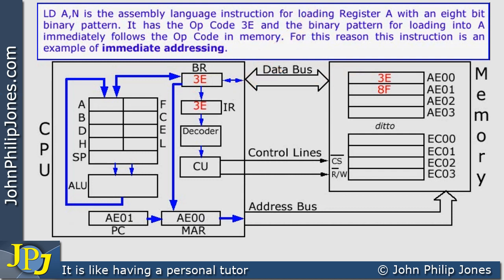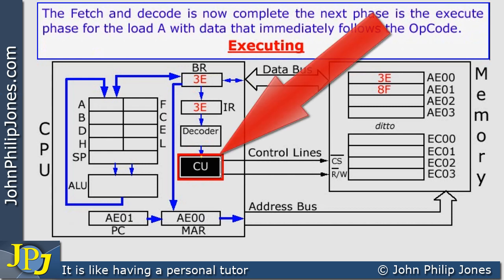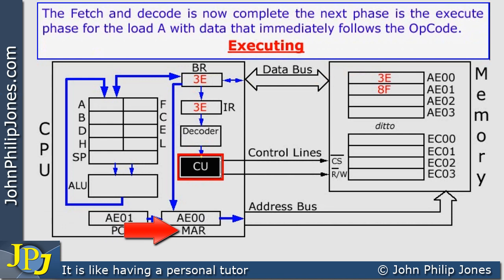This is the fetch cycle. The decoder will then decode the content of the instruction register — in other words, it finds out what 3E means — and passes this information to the control unit. The control unit then causes a sequence of events: the contents of the program counter, which is AE01, are transferred to the memory address register, at which point the program counter increments by one to point to the next location in memory.